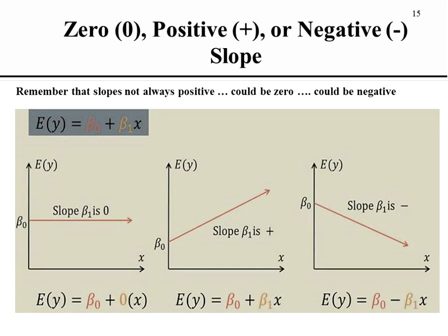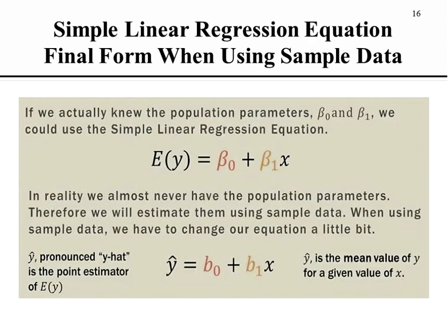The slope of the line can represent a positive value — which is the example we've been showing where the line is on an upward slope. It can also be zero, meaning it's a straight horizontal line. Or you could have a slope that's a negative number, in which case the rise and run moves down instead of up and the line slopes downward. So you can have negative relationships as well. Just keep in mind that the slope can be positive, negative, or zero.